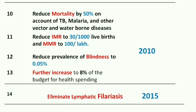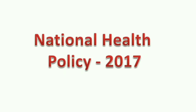Fifth target for 2010: reduce communicable disease-related mortality by 50%, especially TB, malaria, and other vector and waterborne diseases. Sixth: reduce IMR (infant mortality rate) to 30 per 1,000 live births and MMR (maternal mortality rate) to 100 per 1 lakh mothers. Seventh: reduce prevalence of blindness to 0.05%. Eighth: further increase state health expenditure from 7% to 8% of total budget. The 14th target, for 2015: eliminate lymphatic filariasis.